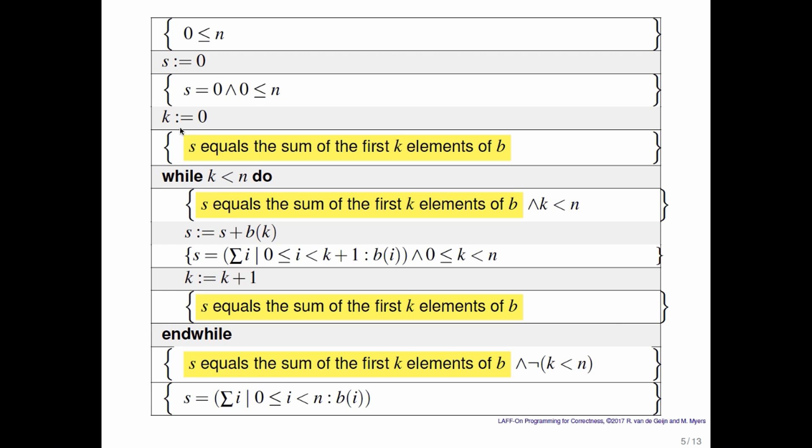And since k is no longer less than n, we conclude that k is equal to n, and therefore we have computed the sum of the first n elements of b. In other words, we have computed the sum of all elements of b. So that's mathematical induction.